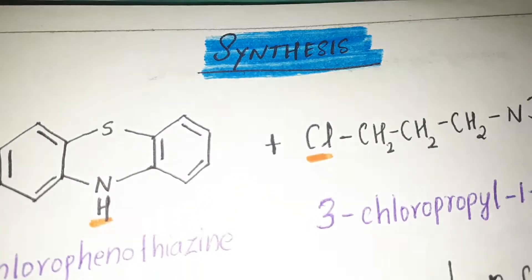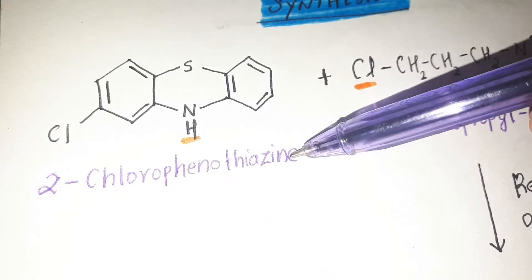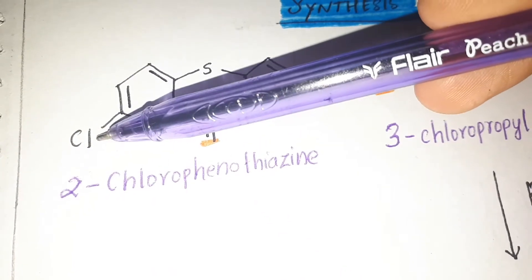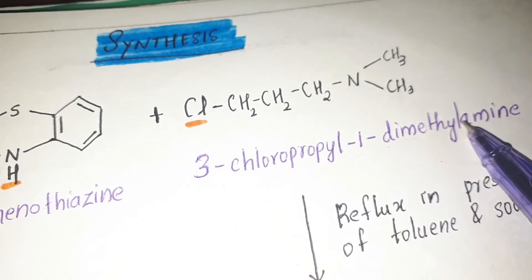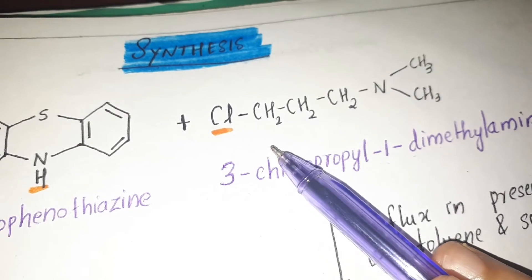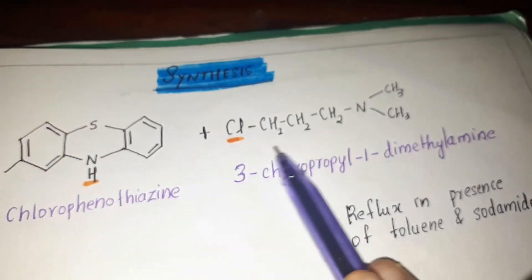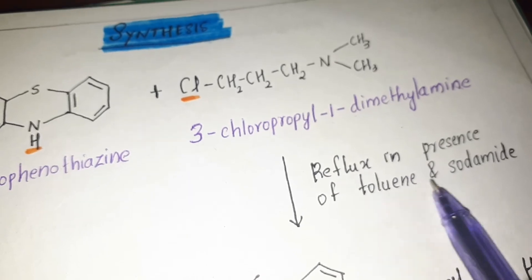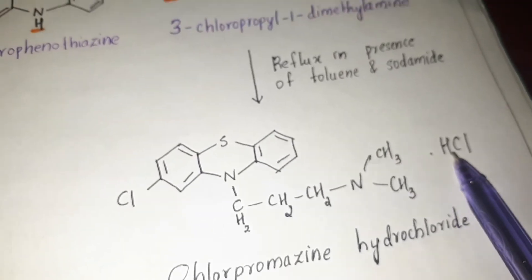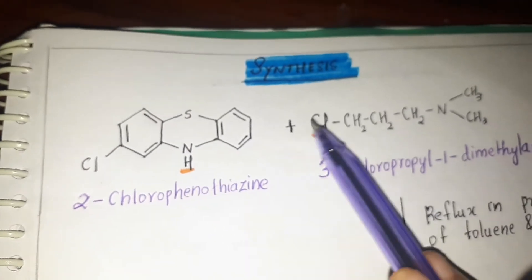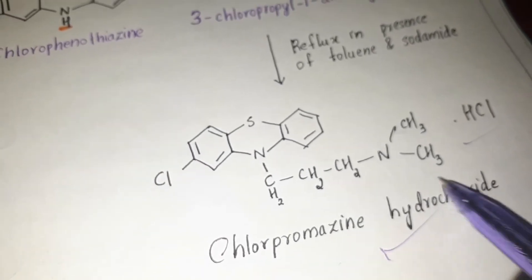For the synthesis, we start with 2-chlorophenothiazine, where chlorine is attached at the second position of the phenothiazine ring. This combines with 3-chloropropyl-1-dimethylamine, which has chlorine at the third position and two methyl groups on the amine. Both reactants undergo reflux in the presence of toluene and sodamide to form chlorpromazine hydrochloride, with hydrogen from the 2-chlorophenothiazine and chlorine from the chloropropyl compound forming the HCl salt.